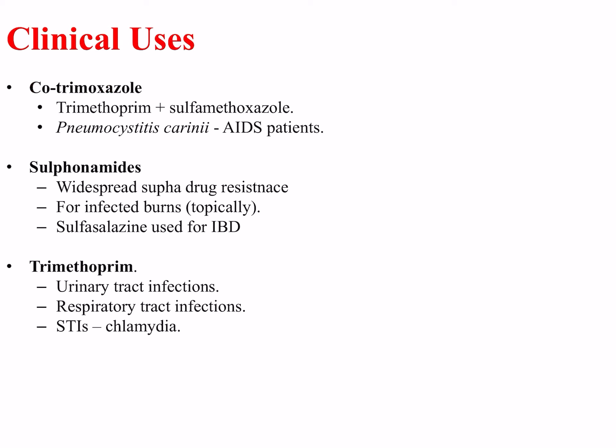With the sulfonamides there is widespread sulfa drug resistance, but they can be used to treat infected burns topically. Another family member, sulfasalazine, is often used to treat inflammatory bowel diseases. Trimethoprim is used for urinary tract infections, respiratory tract infections, as well as sexually transmitted infections including chlamydia.